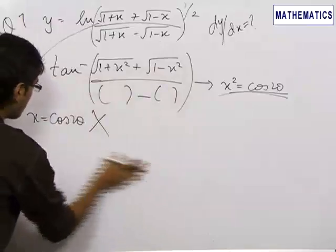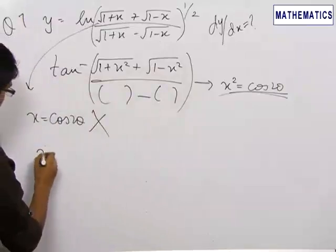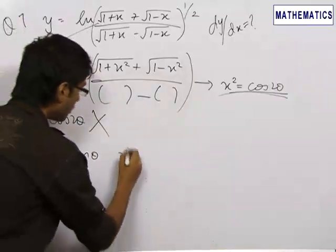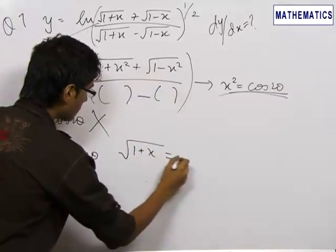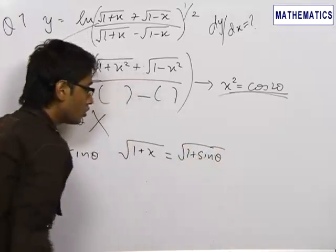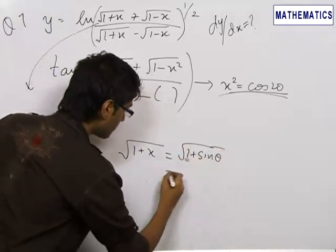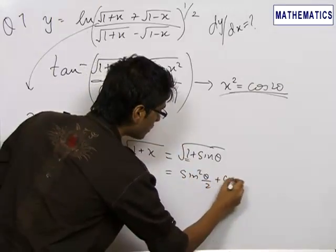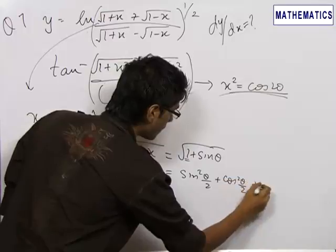So we try for a different substitution. We use x equals sin θ. Now √(1+x) is equal to √(1+sin θ). We could write this one as sin²(θ/2) plus cos²(θ/2).